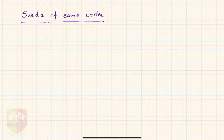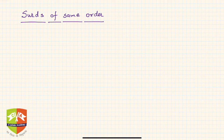Hi friends, continuing with the sessions. We are on radicals of same order. We have seen what radicals are, what similar radicals are, and we have also solved a few problems around that. Now in this session, we are going to study radicals of same order.